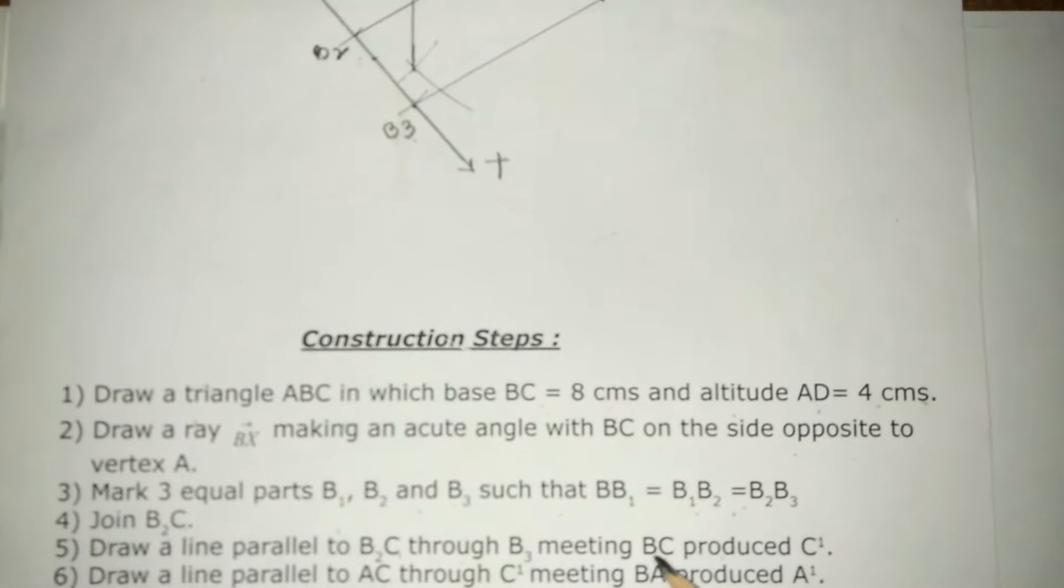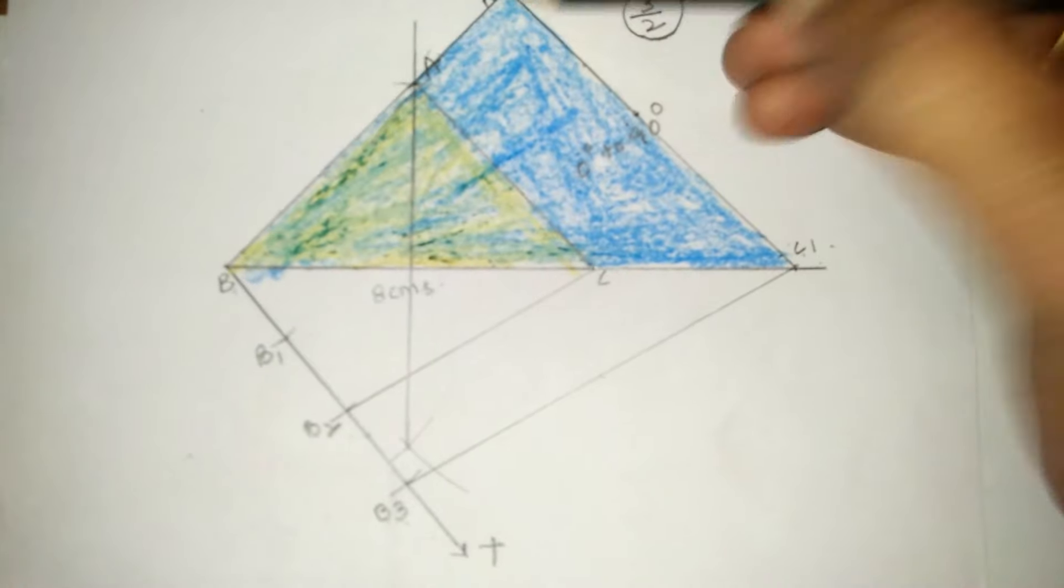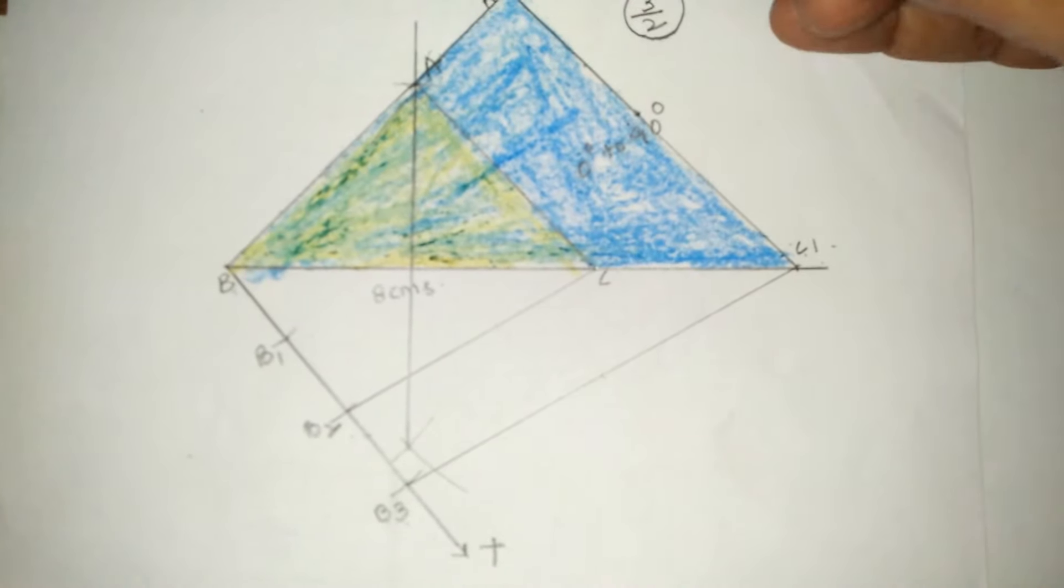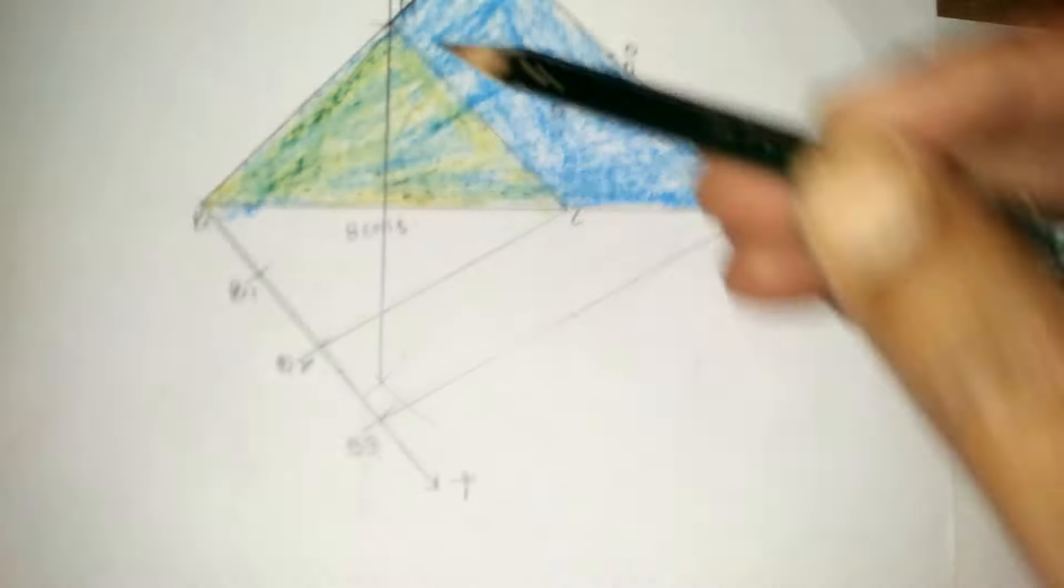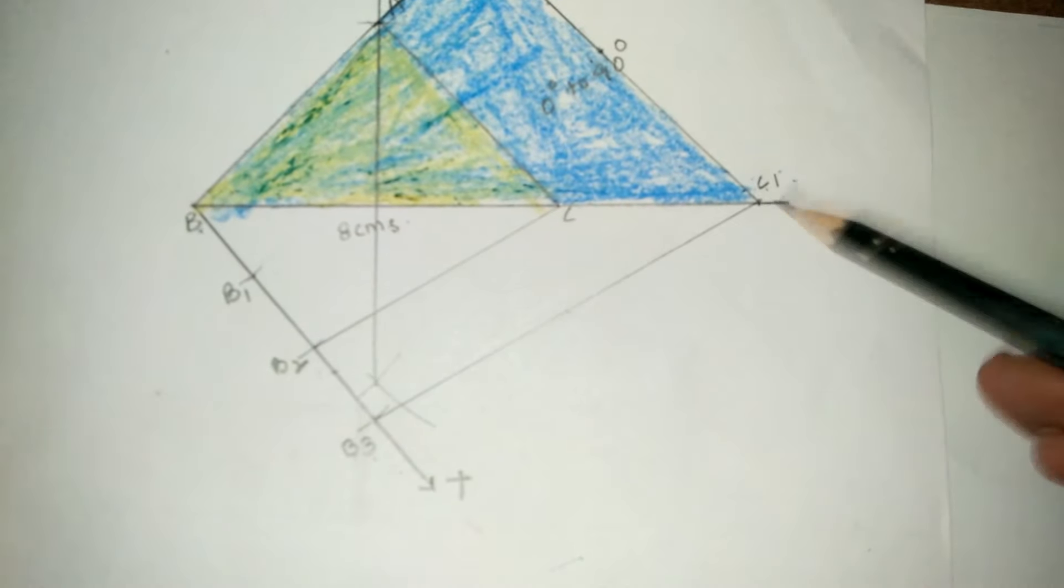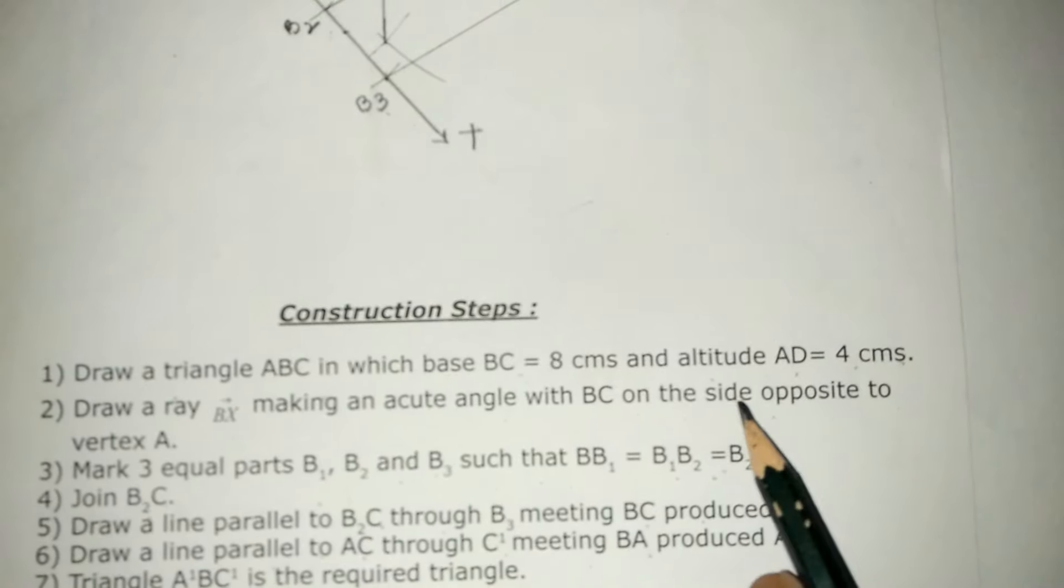In the same similar way draw another line parallel to AC through C1 meeting BA produced at A1. So AC is parallel to A1C1. Triangle A1BC1 is the required triangle.